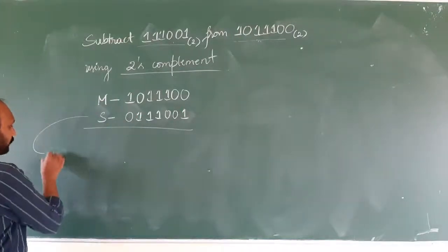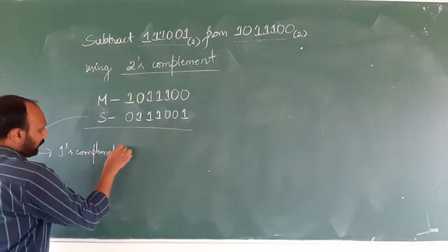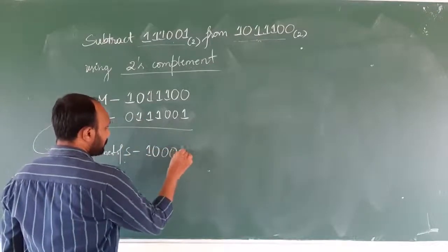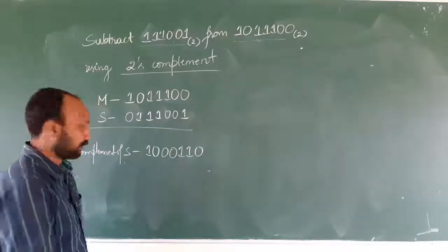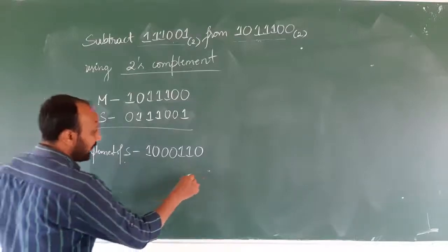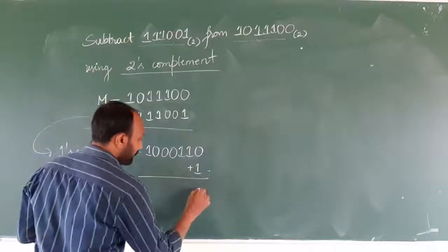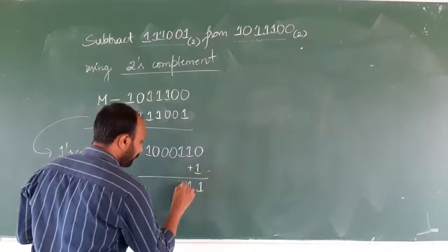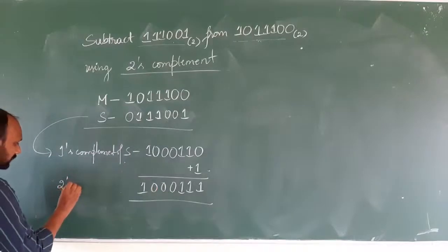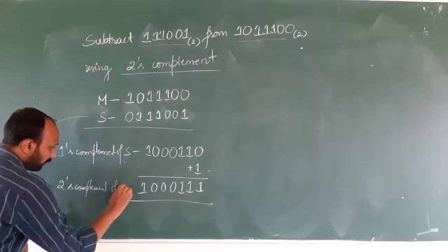After doing this, we need to find the one's complement of the subtrahend by converting 0 to 1 and 1 to 0. Next, to convert to two's complement, add bit value 1 to the rightmost bit of the one's complement. After adding 1, the result is 1001001. This is the two's complement of the subtrahend.